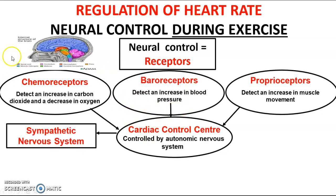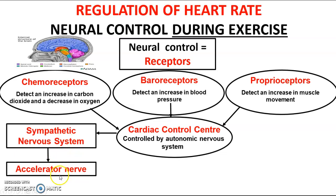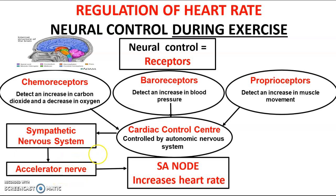When the cardiac control center receives information during exercise, it stimulates the sympathetic nervous system, which is responsible for increasing heart rate. The sympathetic nervous system then stimulates a nerve called the accelerator nerve, which in turn stimulates the pacemaker of the heart - the SA node. The SA node then increases heart rate. That's what happens during exercise.